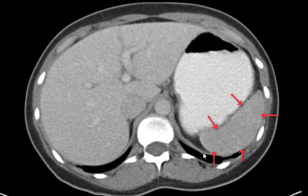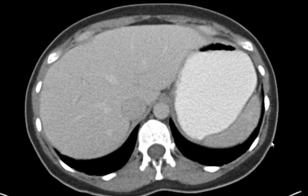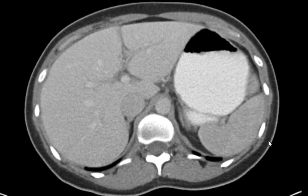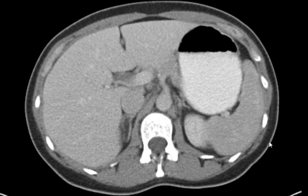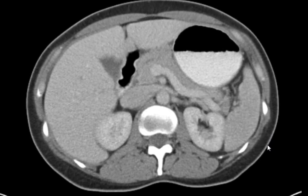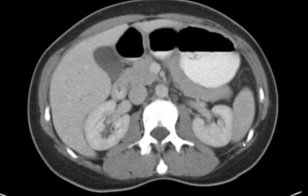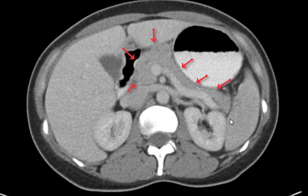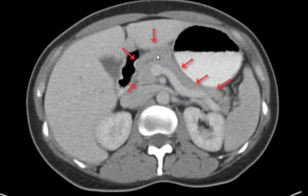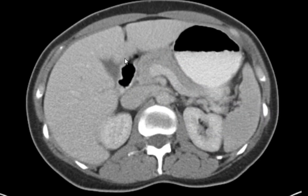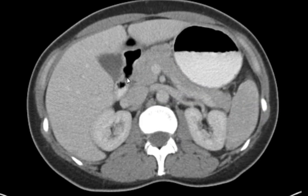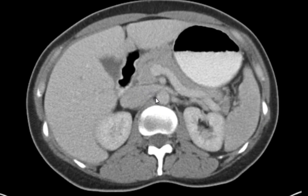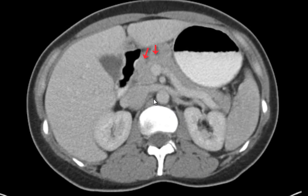We've got the spleen, which looks pretty normal — normal enhancement pattern, no masses. And the pancreas: following the tail of the pancreas up towards the body and into the head and neck region. You can barely see a little bit of the pancreatic duct, but that's normal.